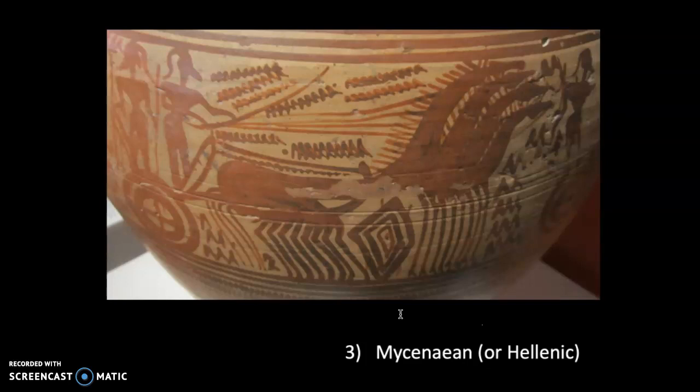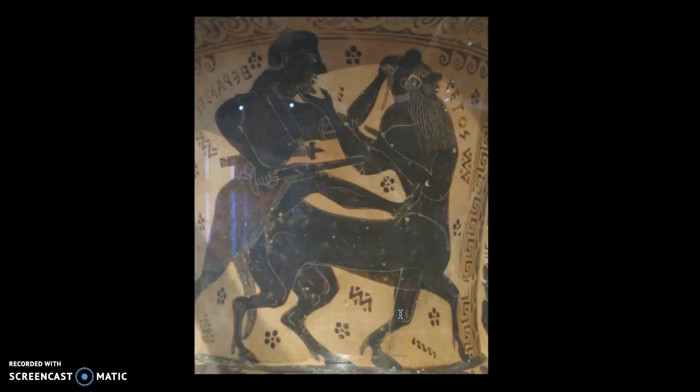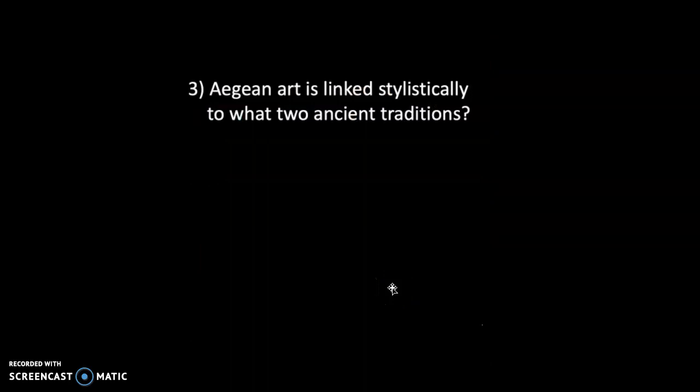And then after them came the Mycenaeans. You can see the difference — one is stereotypically peaceful, the other is all swords and chariots. The Mycenaeans led to the classical Greeks. So Aegean art is linked stylistically to the Fertile Crescent, which had several different cultures: the Sumerians, Babylonians, Assyrians, etc. They're also linked to the Hittites, but also to Egypt.